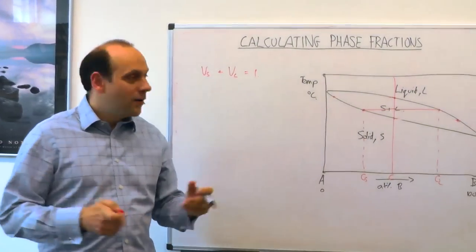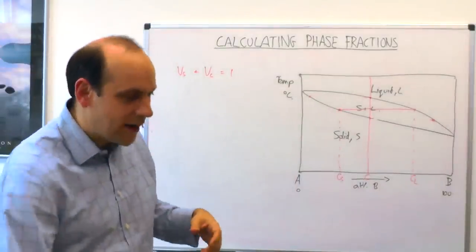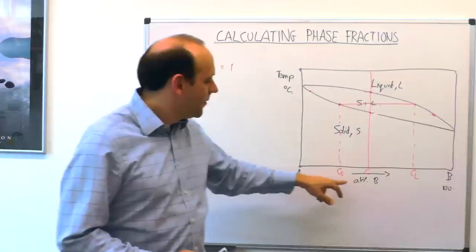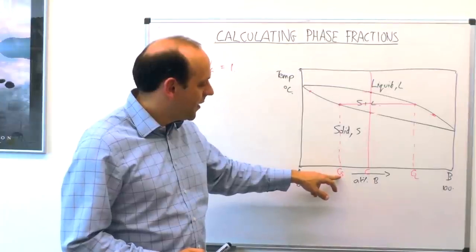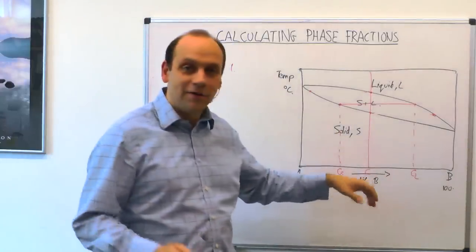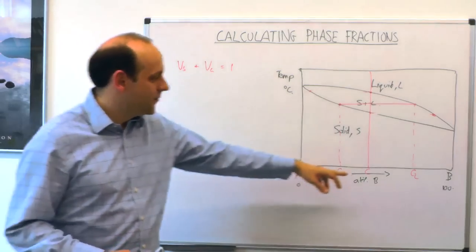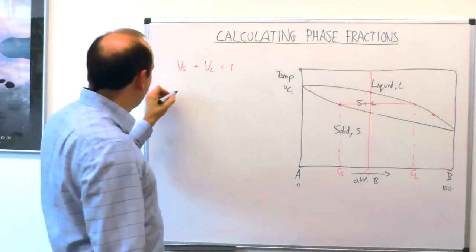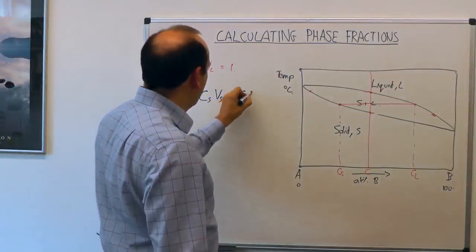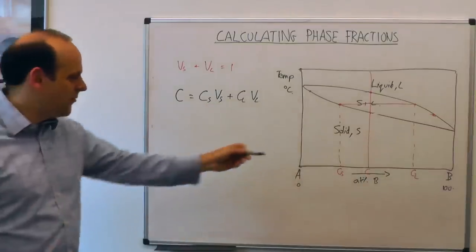We need to think about the overall composition and how we conserve atoms. For example, if the solid composition is 25% and the liquid composition is 75%, and we have half of each, we'd average out at 50%. So the overall composition is fixed. What we're saying is that the overall composition equals the composition of the solid times its volume fraction, plus the composition of the liquid times its volume fraction. This holds in atomic or mass percent.